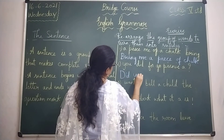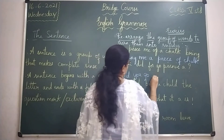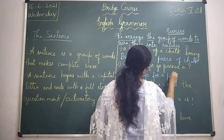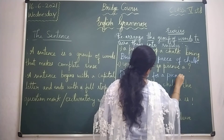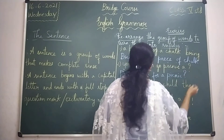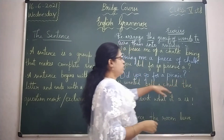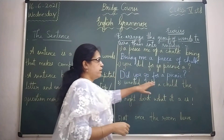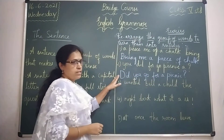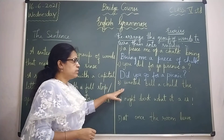The second group of words, once rearranged, becomes: 'If you go for a picnic?' Begin with a capital letter and end with a question mark. So it makes complete sense there.